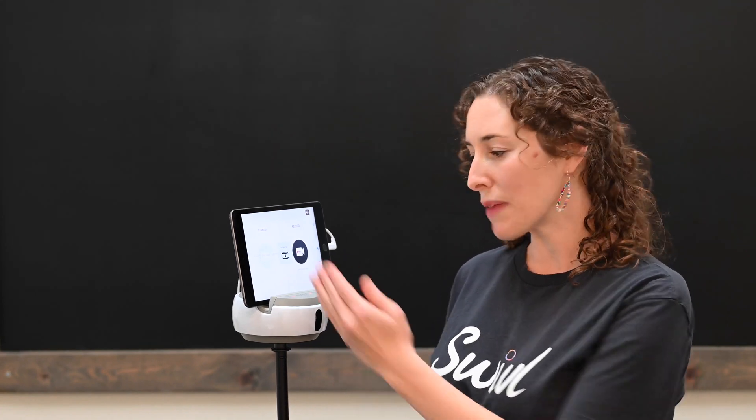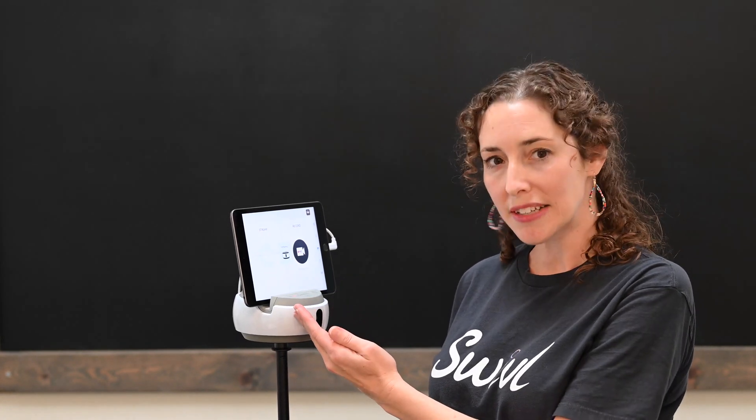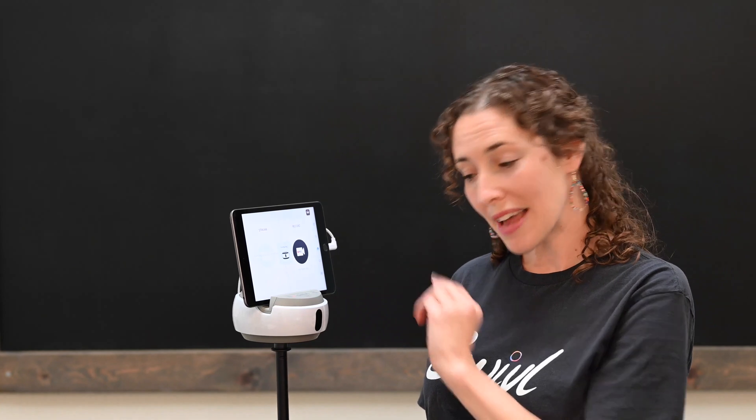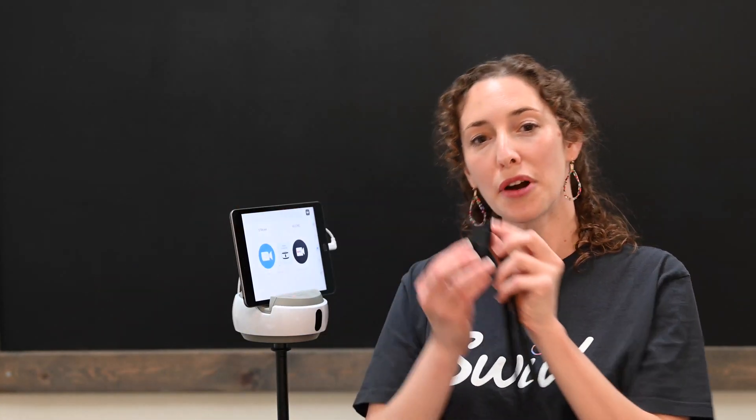Right now I have a green light next to the power button because my iPad is successfully connected to the robot base. But next I need to turn on the marker. The marker is what the robot will use to track you in the classroom and it's also your microphone.